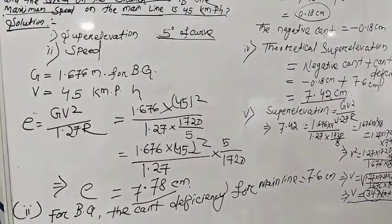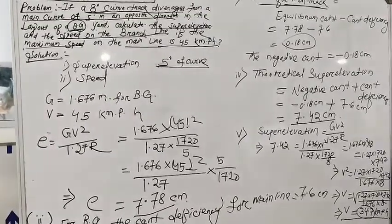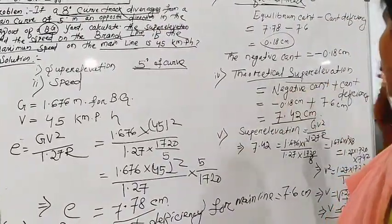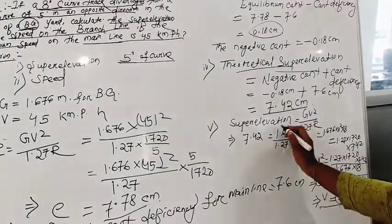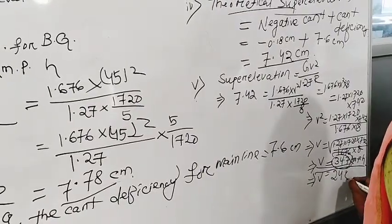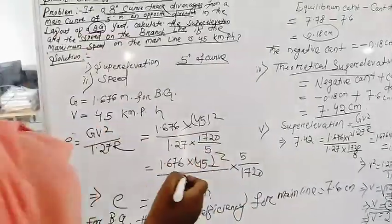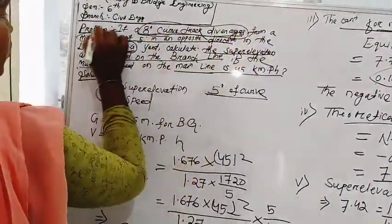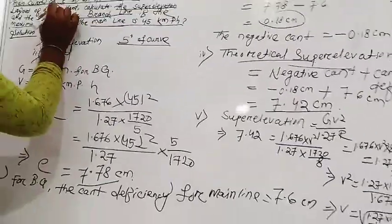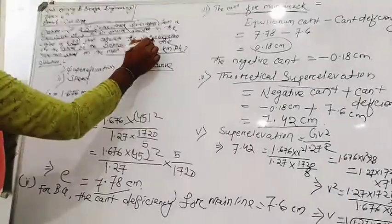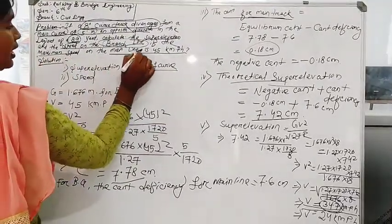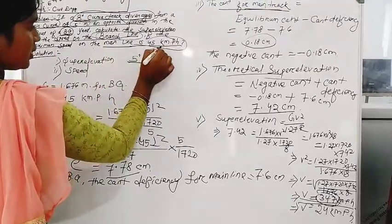The theoretical speed on the branch line is 34.7 km per hour. However, the maximum speed on the branch line should not exceed 24 km per hour. The theoretical speed of 34.7 km/h exceeds this limit, so the maximum permissible speed on the branch line is taken as 24 km per hour.